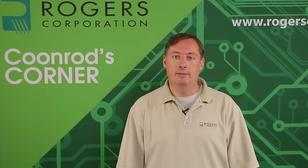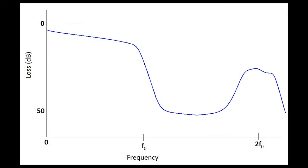In this illustration, you can see from frequency zero out to F-naught, which is the cutoff frequency, the insertion loss is not a flat curve. There is some slight slope, which is normal because as you go across a wide range of frequencies, the insertion loss will increase.